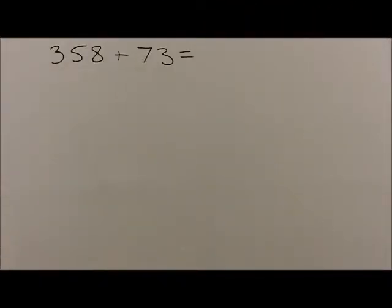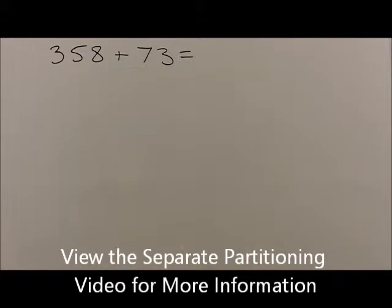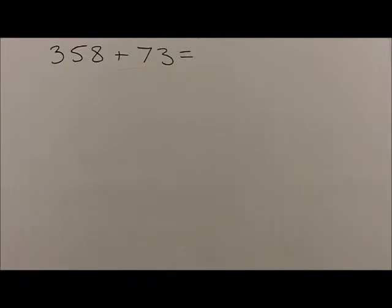When a 3 digit number is added to a 2 digit number, they are each partitioned accordingly into their respective hundreds, tens and units, and tens and units. So for the question 358 plus 73...